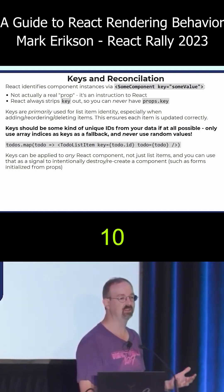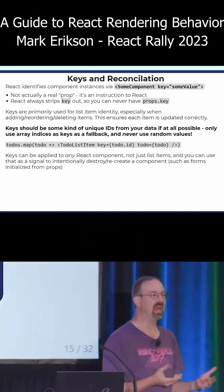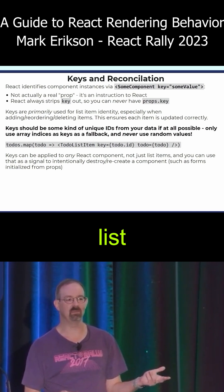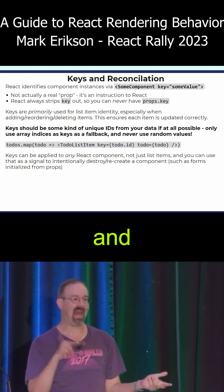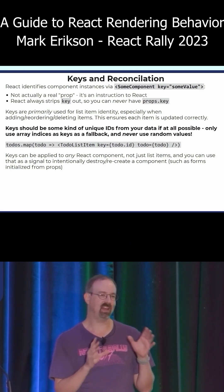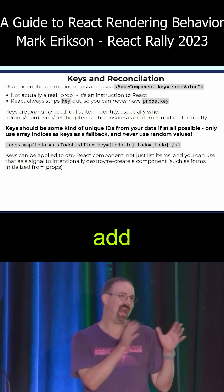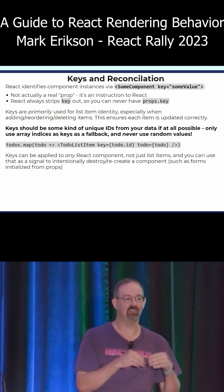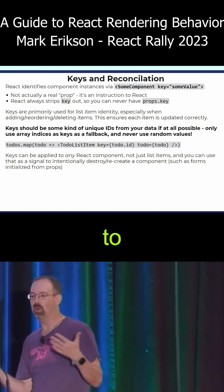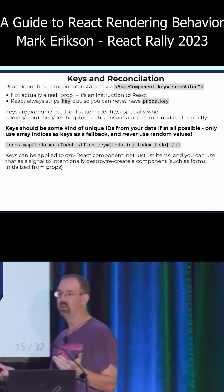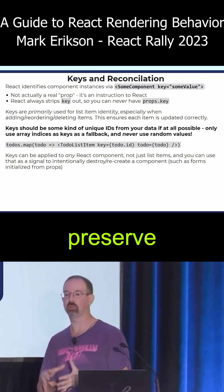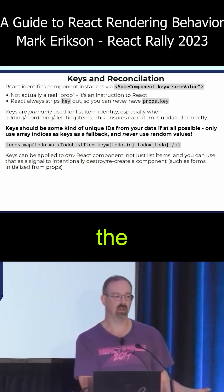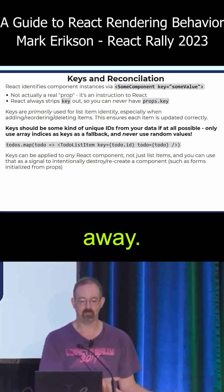So if I've got those ten to-do list items and I delete one in the middle and add two more at the end — did I add and remove? Did I move them around? Did I just change the contents? React needs to know which of these is which, so it can preserve the ones that actually need to stay alive and delete the ones that should have gone away.